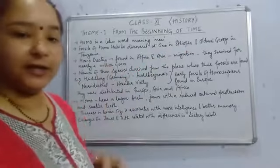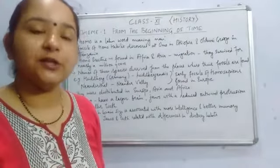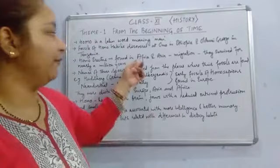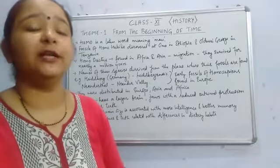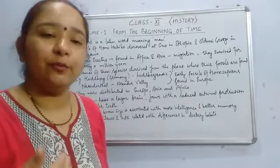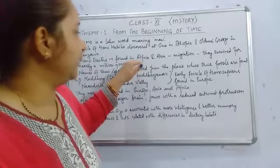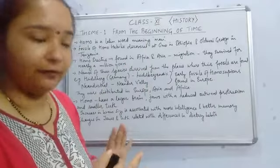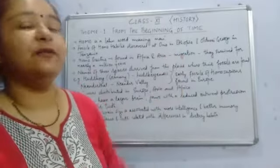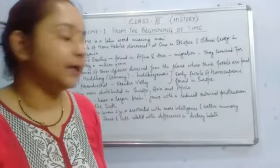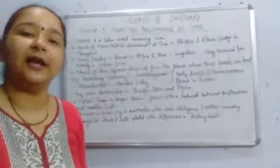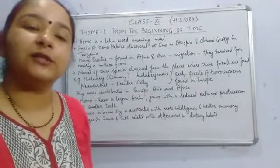The fossils of Homo habilis were discovered at Omo in Ethiopia and Olduvai Gorge in Tanzania. The fossils of Homo erectus are found in Africa and Asia. Finding fossils in two different continents indicates that migration was taking place — they probably migrated from eastern Africa to western Asia. It is believed that they survived for one million years, a very large time span.